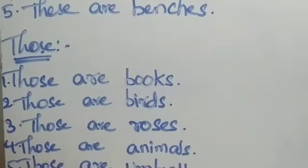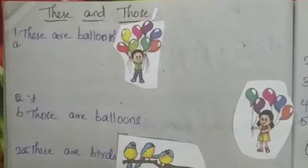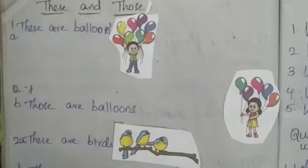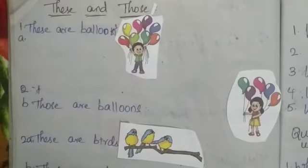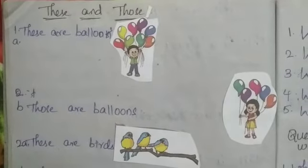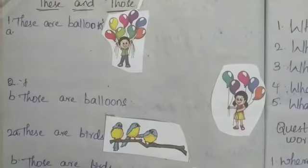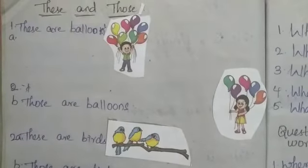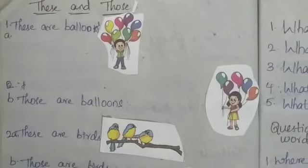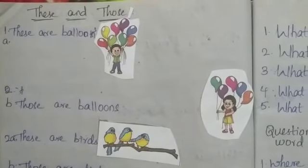Now let us learn some more examples based on 'these' and 'those.' Here, 'these are balloons' — a boy is carrying more than one balloon nearby. Moving to the next example, 'those are balloons' — the balloons are far. Here the speaker is standing at one side and the girl is carrying the balloons at a little distance.